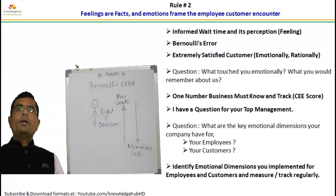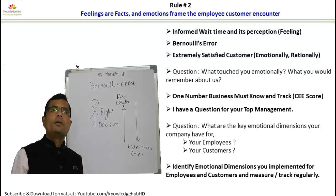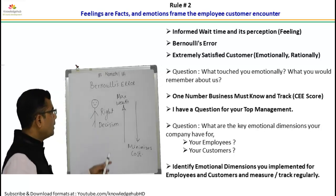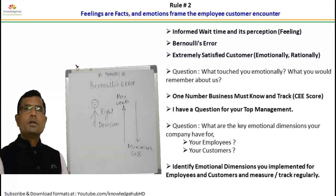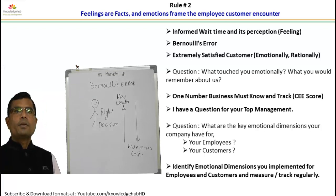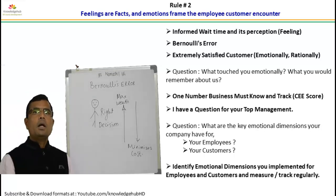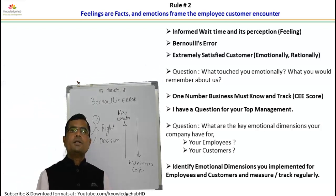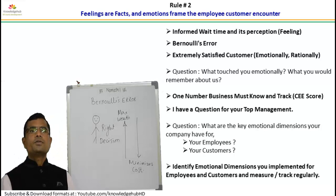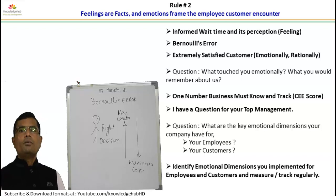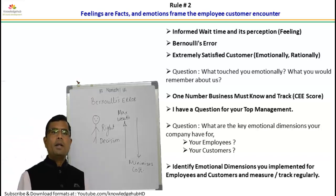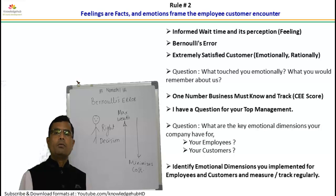Now we'll see what is Bernoulli's error. The right decision according to Bernoulli was the one that maximized an individual's wealth and minimized his cost. Every company has largely untapped enormous potential for breakthrough improvements in employee productivity, customer retention, profitability, and sustainable growth. Before companies can achieve these gains, they must first improve their understanding of how the emotional economy works. Harnessing this potential starts with re-evaluating how we measure and manage the employee-customer encounter, which we will refer to as ECE.